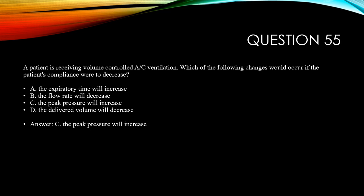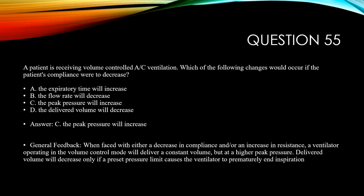The answer is C, the peak pressure would increase. The key here is the patient is on volume control ventilation, not pressure control. That volume is pretty much assured — obviously subject to the pressure limit of the ventilator — but what is variable is the pressure. When faced with either a decrease in compliance or an increase in resistance, a ventilator operating in volume control mode will deliver a constant volume but at a higher peak pressure. Delivered volume will decrease only if the preset pressure limit causes the ventilator to prematurely end inspiration.